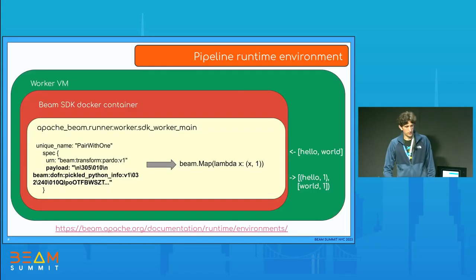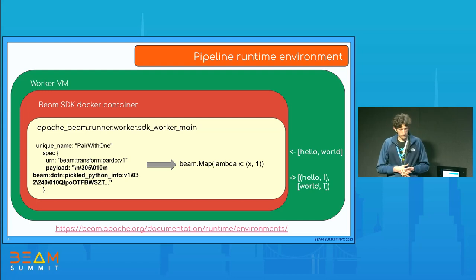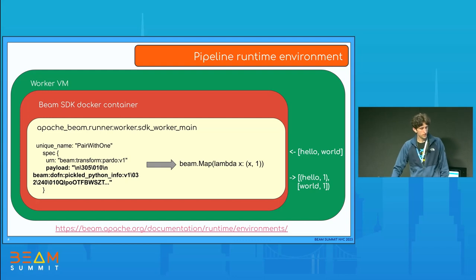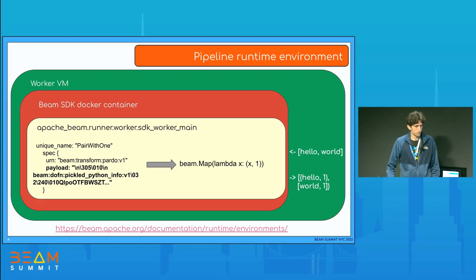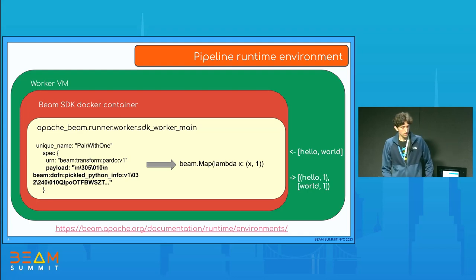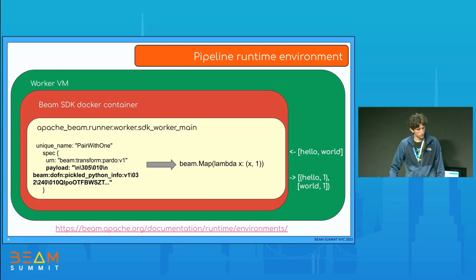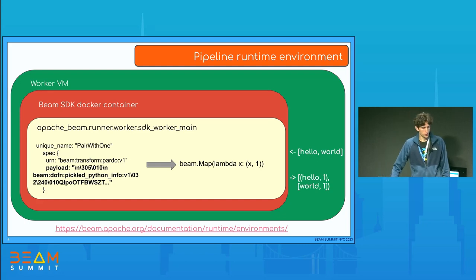The runtime environment is where the bulk of your processing happens. My perspective is biased towards the Dataflow runner. In Dataflow, we have a worker VM that starts multiple containers — one of them is the Beam SDK container. The Beam SDK container launches the process called the SDK worker, which is the Python process that takes the runner API representation, deserializes it into a Python function, and does the bulk of processing. The pipeline runtime environment is that Beam SDK Docker container in which this Python process runs.